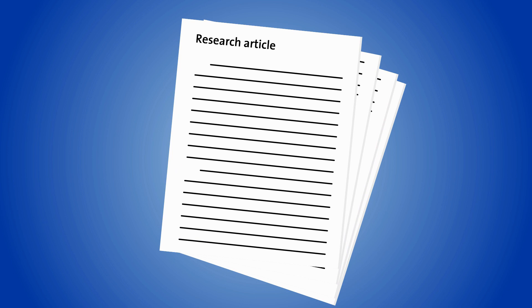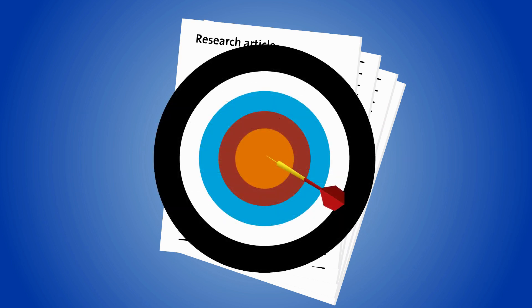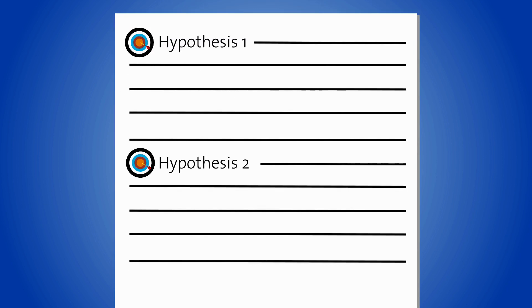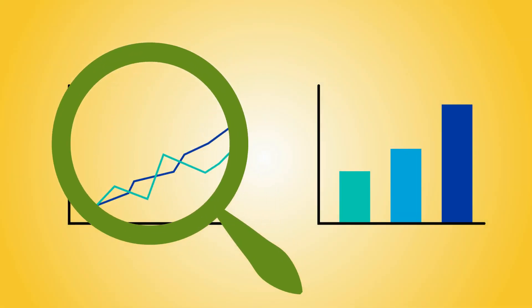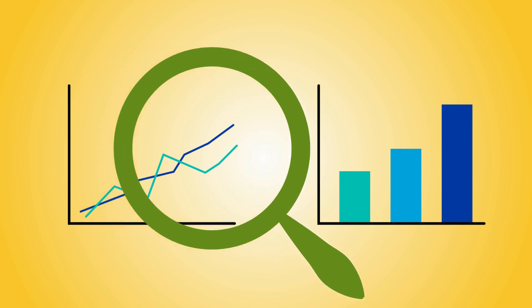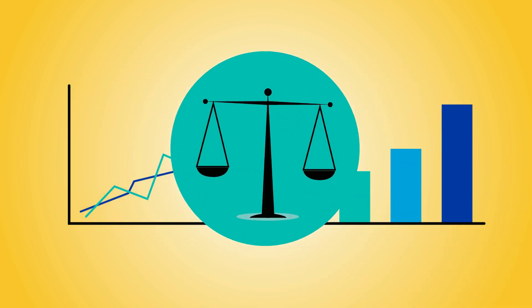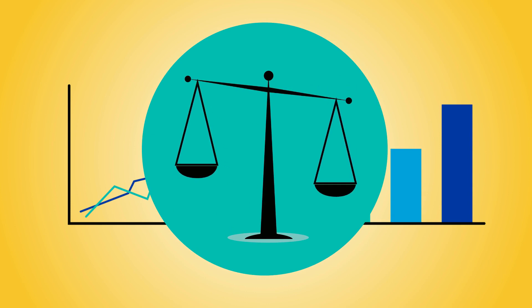One useful tip to keep in mind as you read through a new manuscript is to focus on the objectives laid out by the authors, which are best indicated by the hypotheses they seek to test. It might be tempting to measure an author's approach to a research problem against the one you might have taken, but it's important to respect the boundaries established in the author's manuscript.